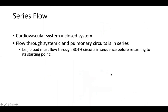Let's keep going and talk more about series and parallel flow. Series describes the entire cardiovascular system. Because the system is a closed system, flow has to go from the systemic to the pulmonary and back to the heart — there is no option. Blood must flow through both circuits in sequence, in series, before returning to its starting point.